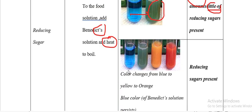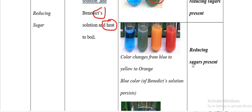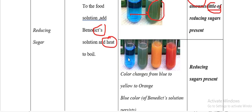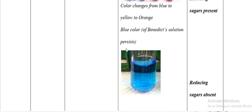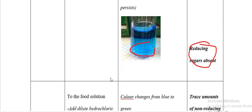If the colour changes from blue to yellow or orange, it means reducing sugars are present. If the blue colour of Benedict's solution is retained, it means reducing sugars are absent.